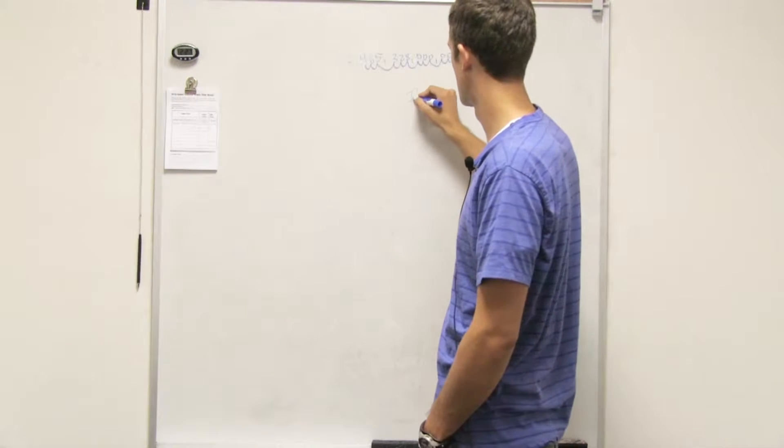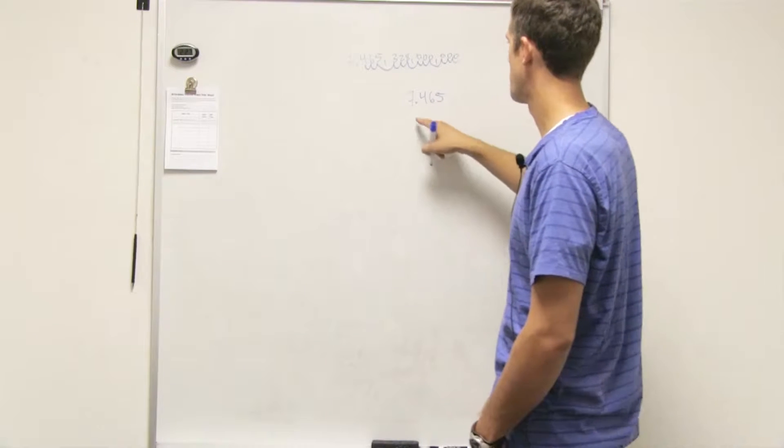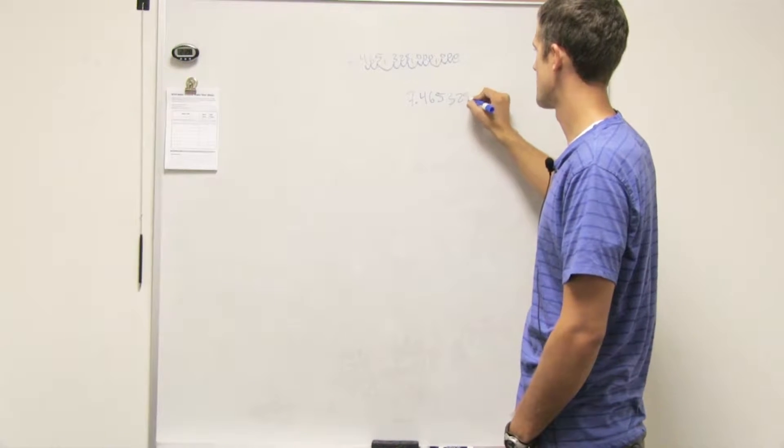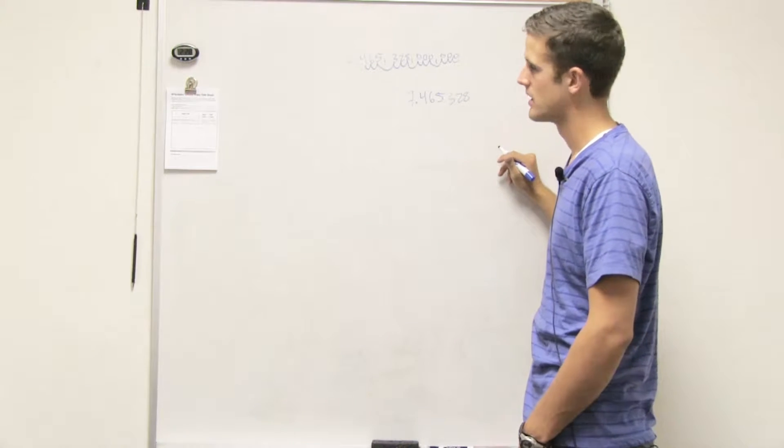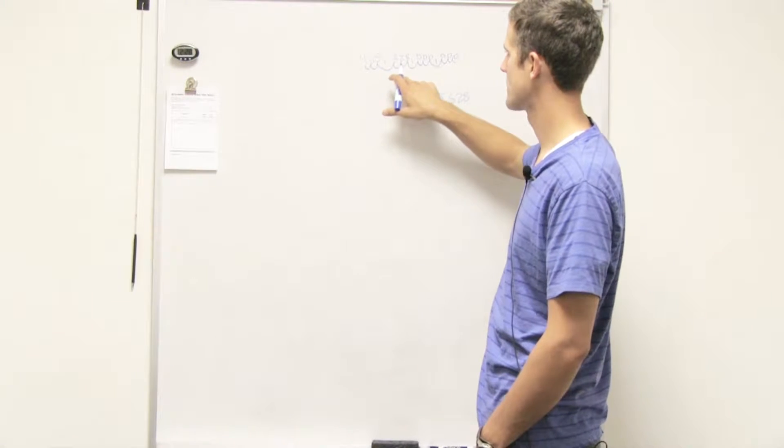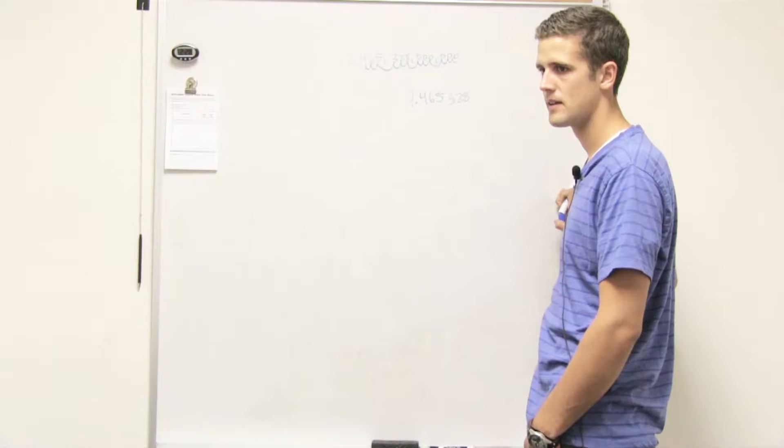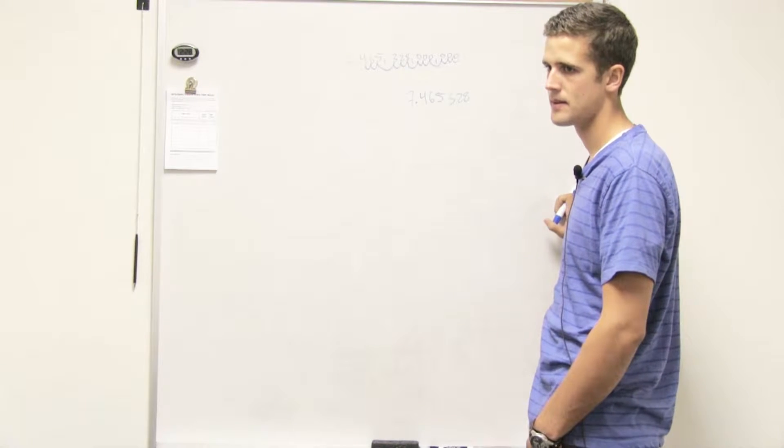So what would your final number be? 7.4653. And at that point, you can keep all those if you want to, but a lot of times they'll shorten it and take off some of that accuracy. It ties into significant figures as well. I suppose it's a combination of these two that I'm having trouble with.